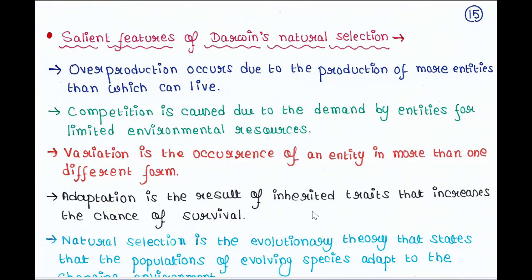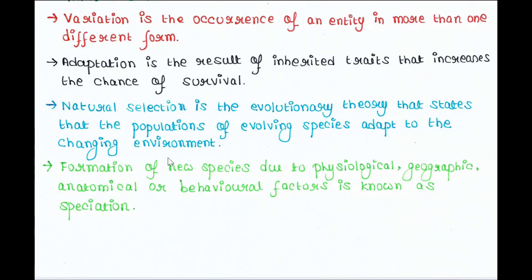Fourth, adaptation is the result of inherited traits that increases the chance of survival. Once birds are adapted to various food sources, they will survive. Fifth, natural selection is the evolutionary theory that states that populations of evolving species adapt to the changing environment. The birds which survived will be selected by nature.